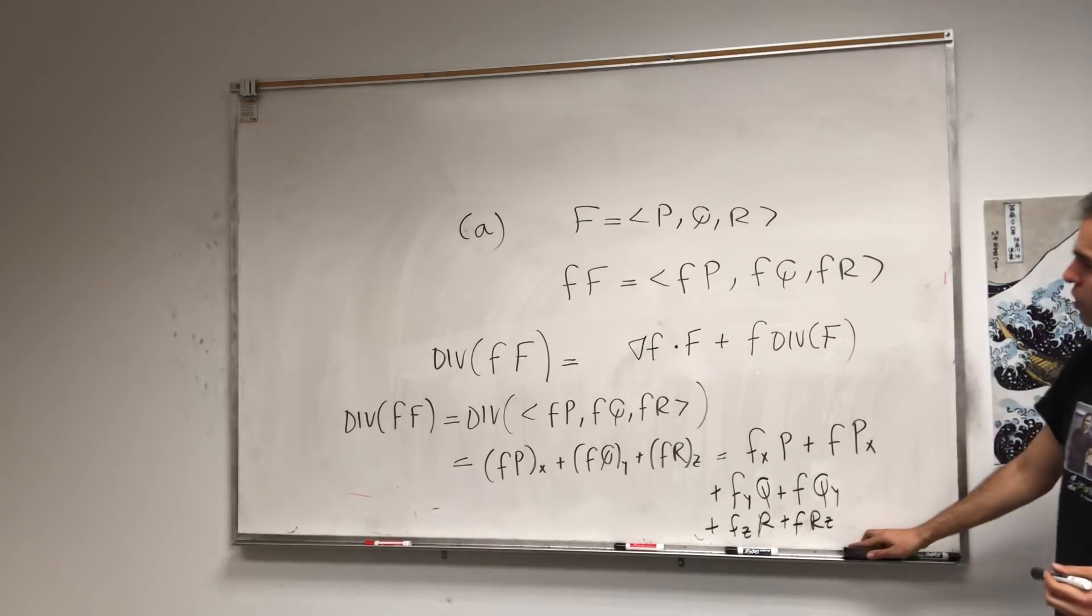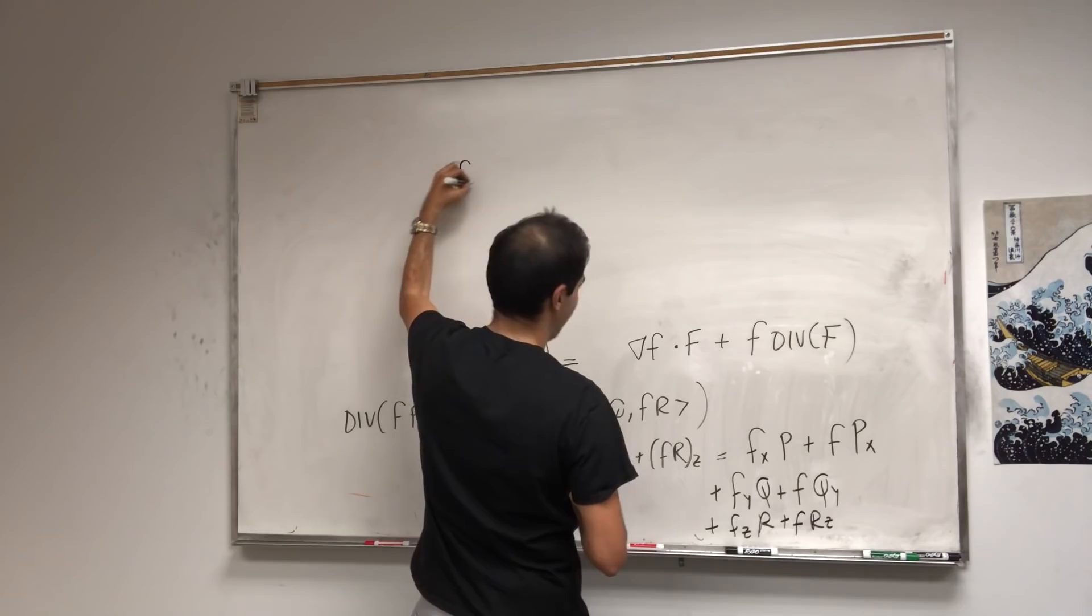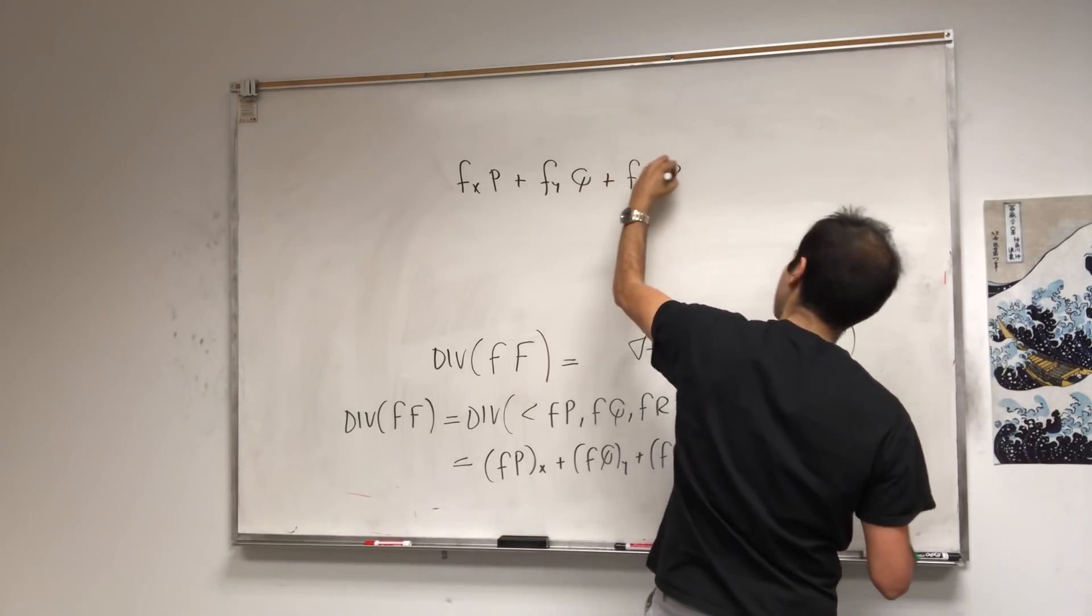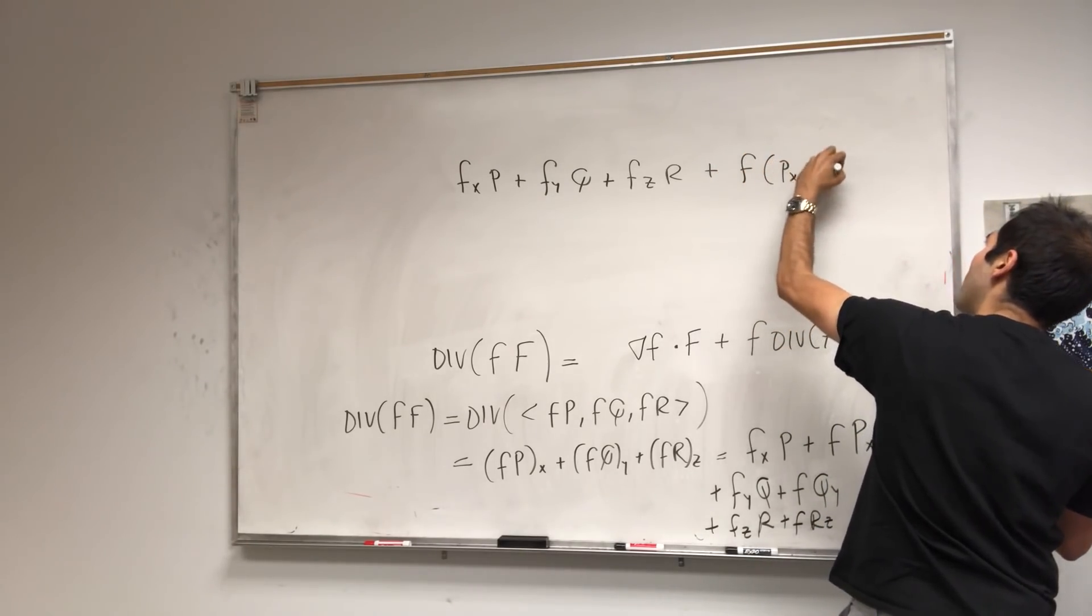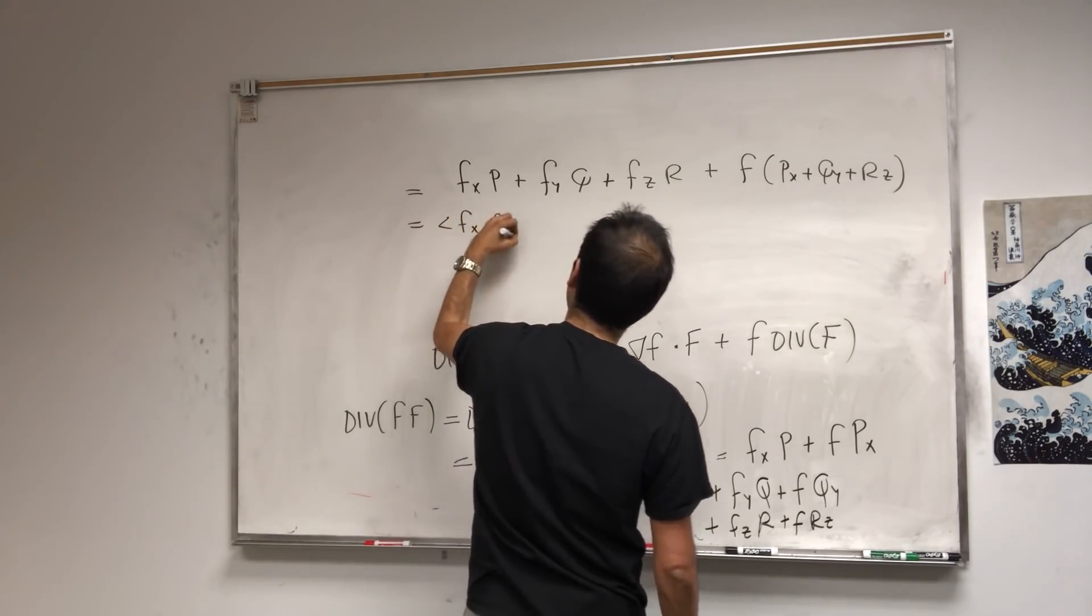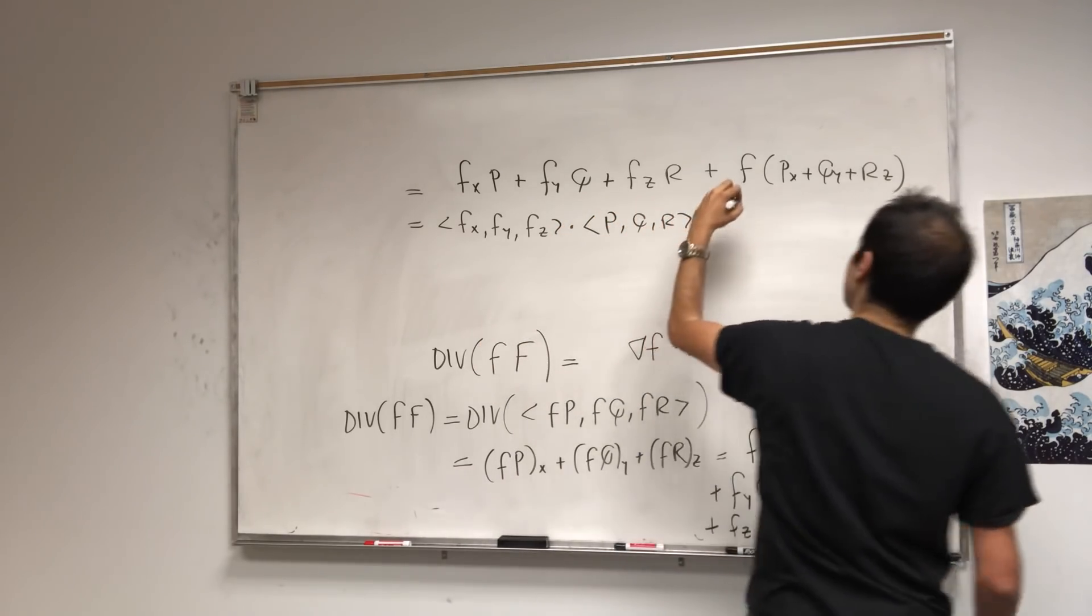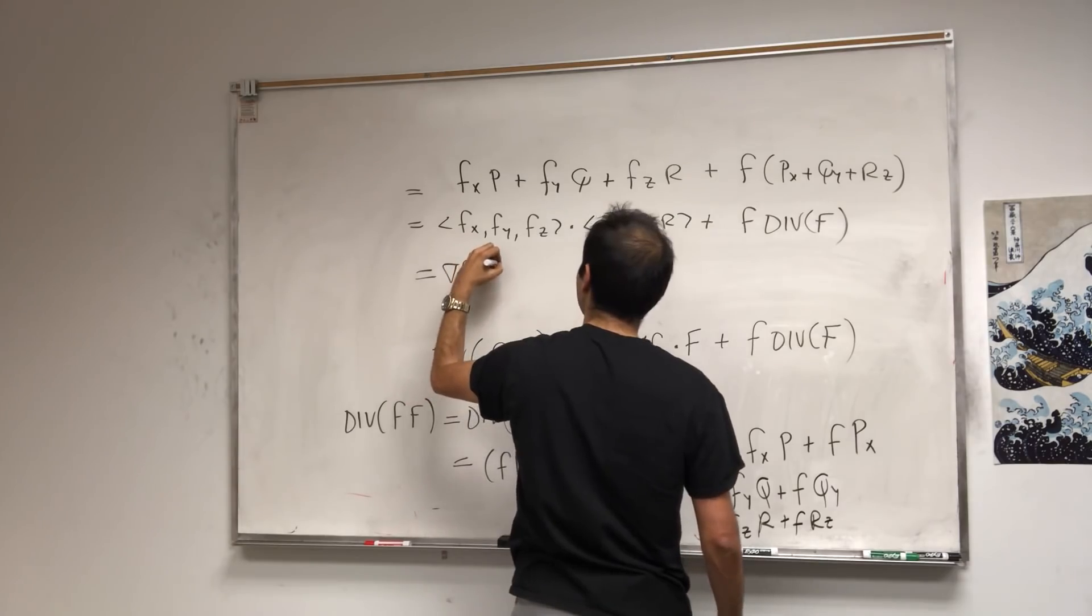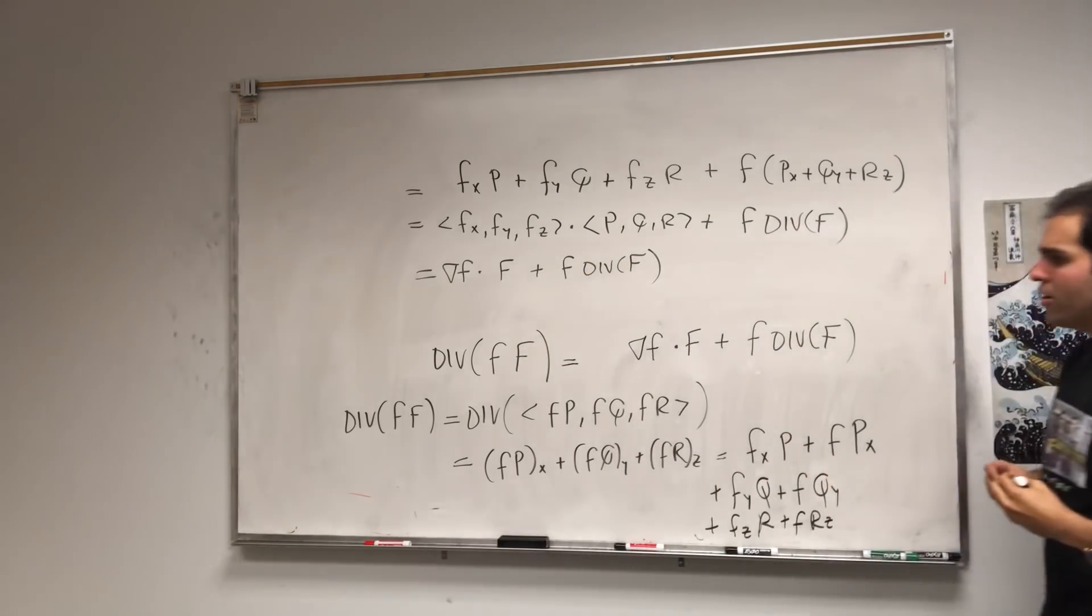And the nice thing is, now write this in terms of columns if you want. Then what you get is f_x P plus f_y Q plus f_z R, and then plus, notice here you can factor out f, so it's f times P_x plus Q_y plus R_z. But what this is, it shows f_x, f_y, f_z dotted with P, Q, R, plus f times, this is just the divergence of F. And at the end you get gradient of little f dotted with capital F, plus f times the divergence of F. So that is that.